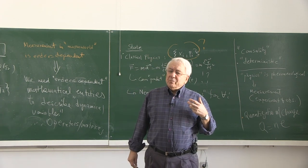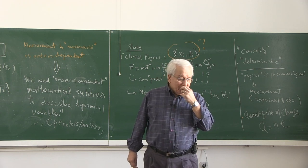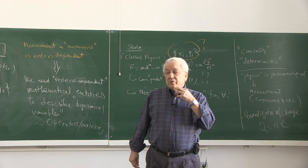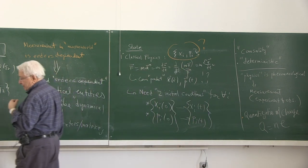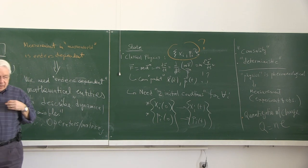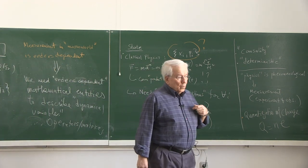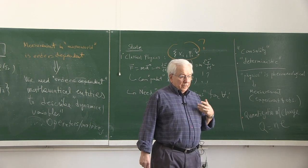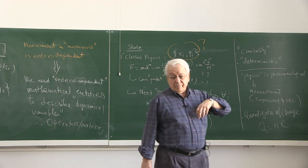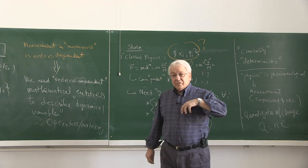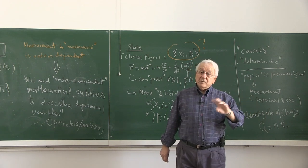Because of this wave nature associated with all those classical things we have known as particles, there must be a wave-like entity used to describe the state in the micro world. That new description is the so-called state vector in a linear vector space, whose coordinates are the wave functions — the coordinates in a given basis like x or p, but not both.